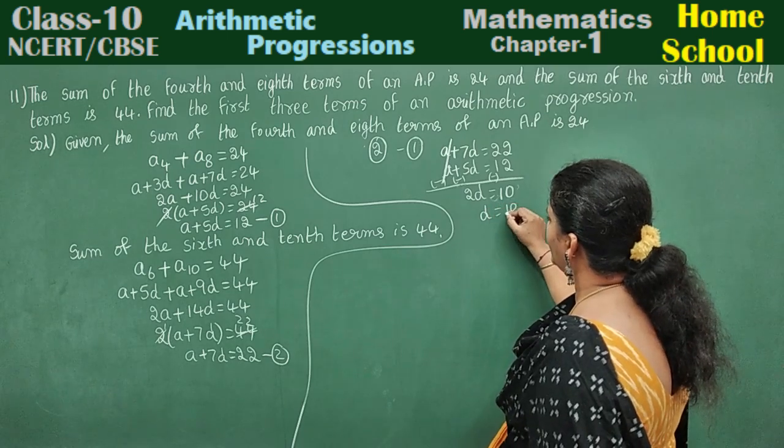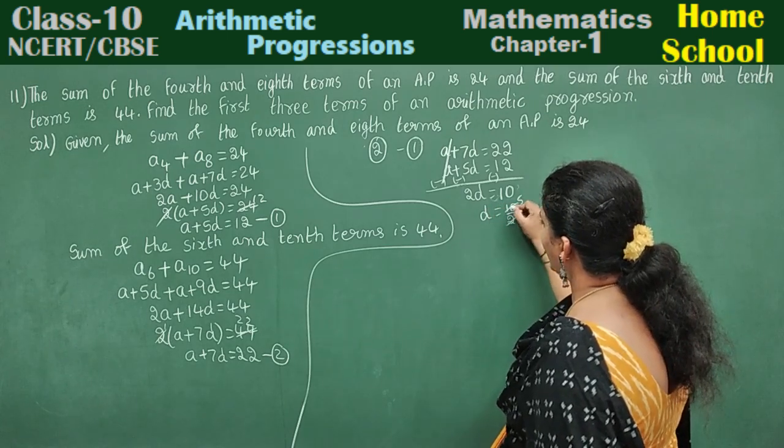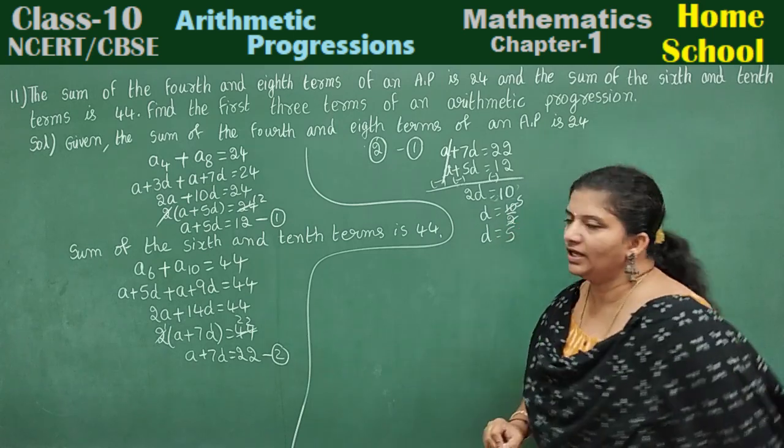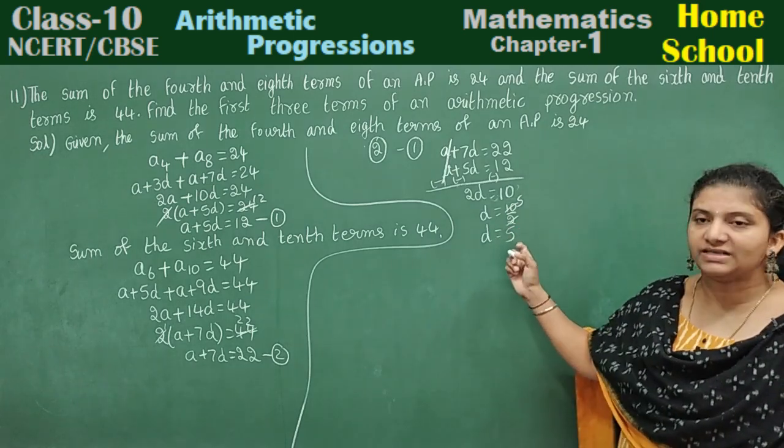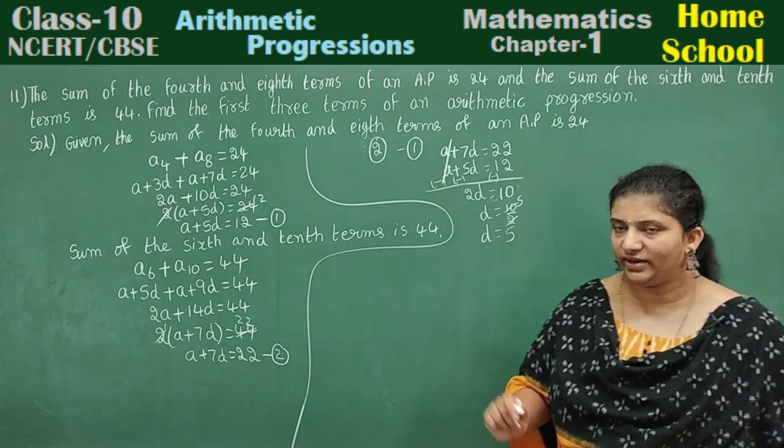D is equal to 10 by 2, which is 5. D equals 5. After getting D, substitute this D value in any one of the equations.